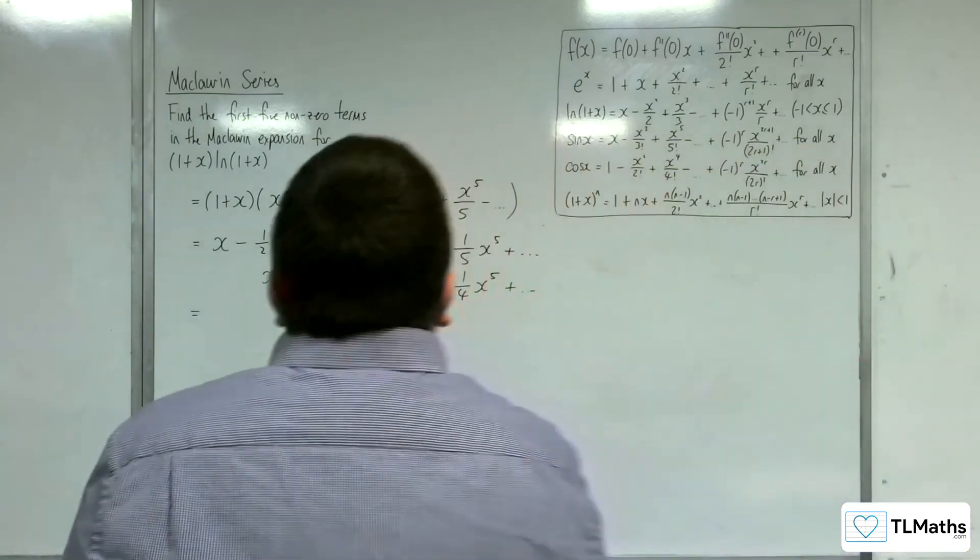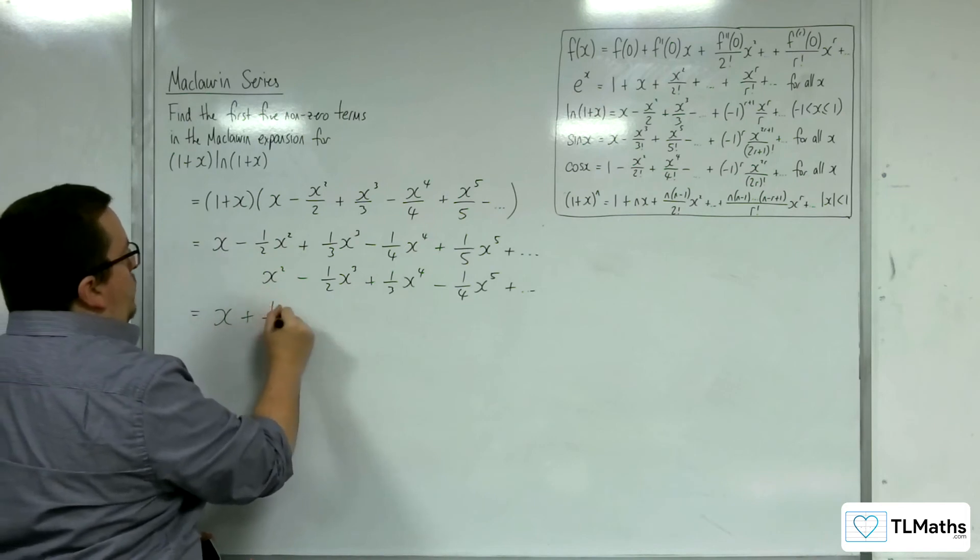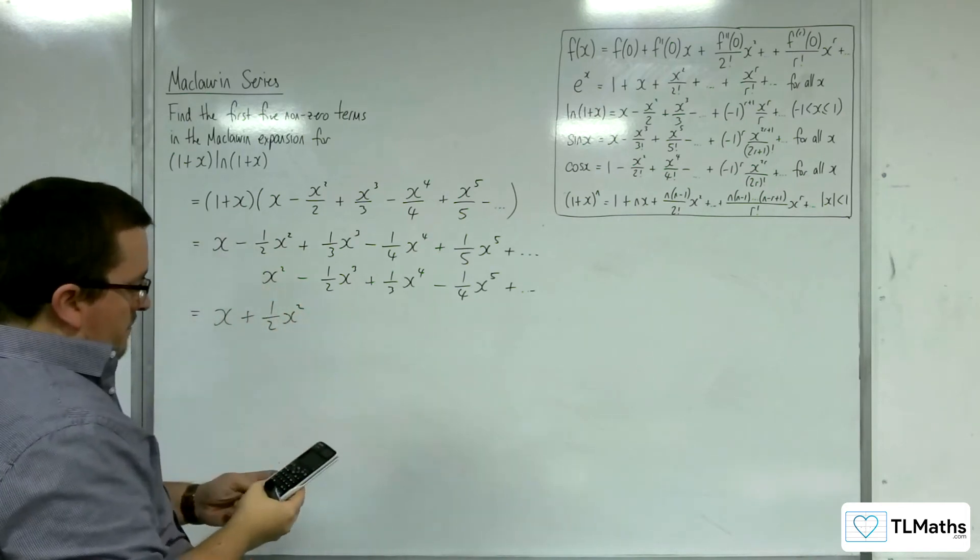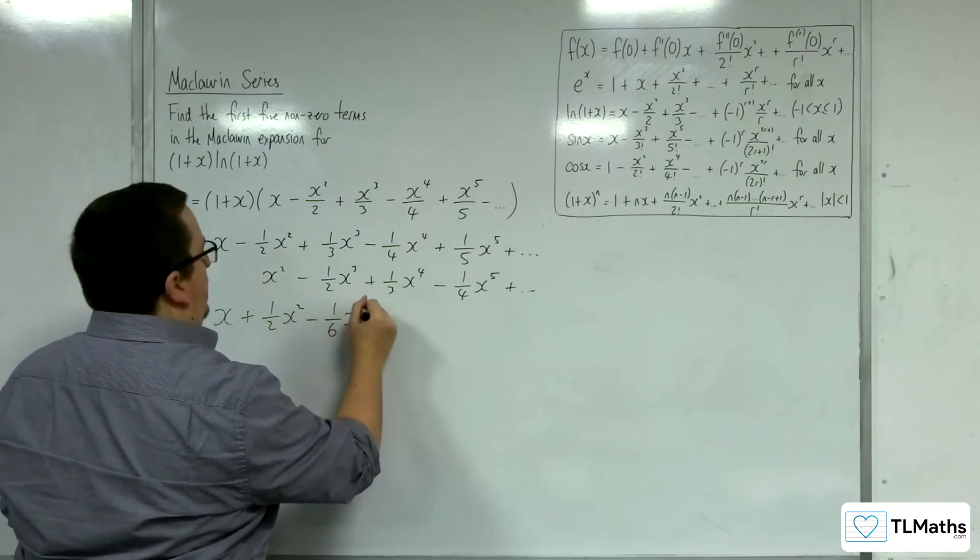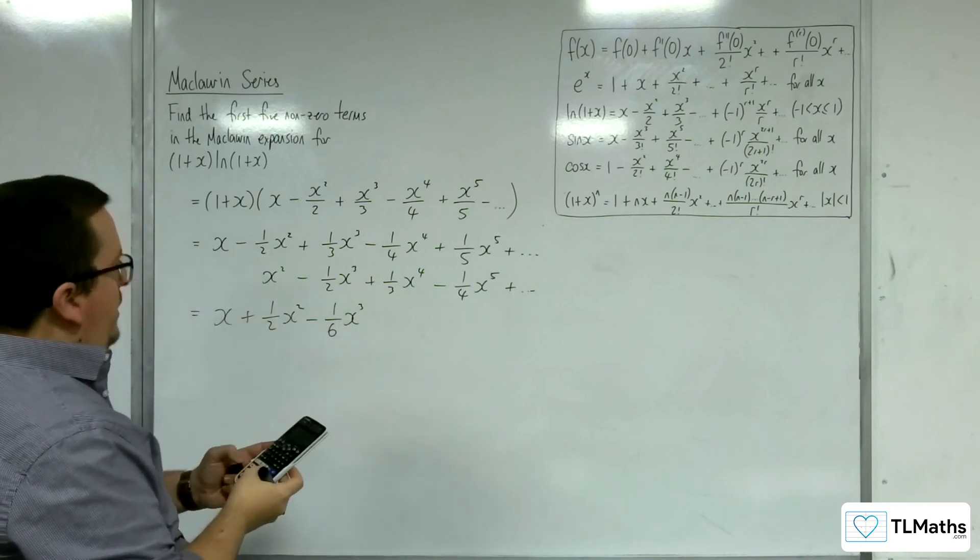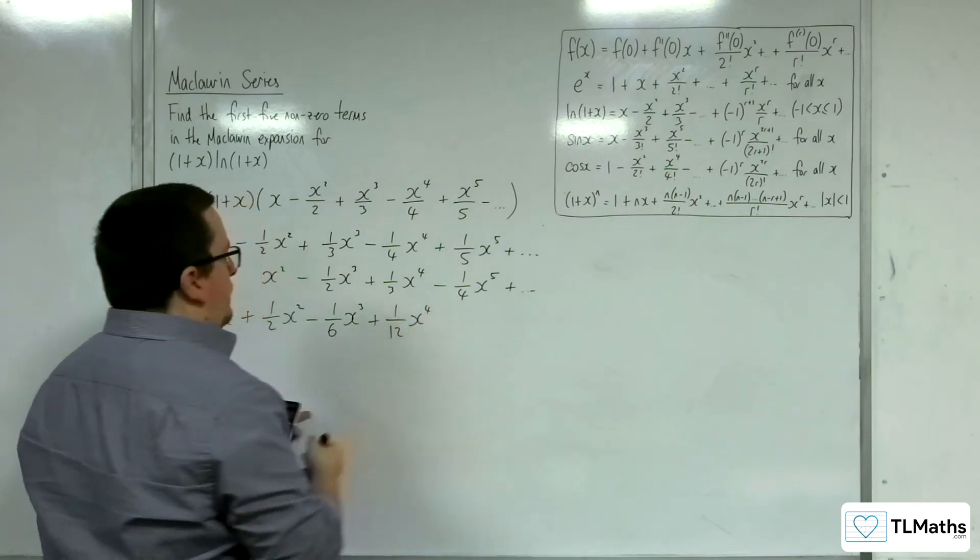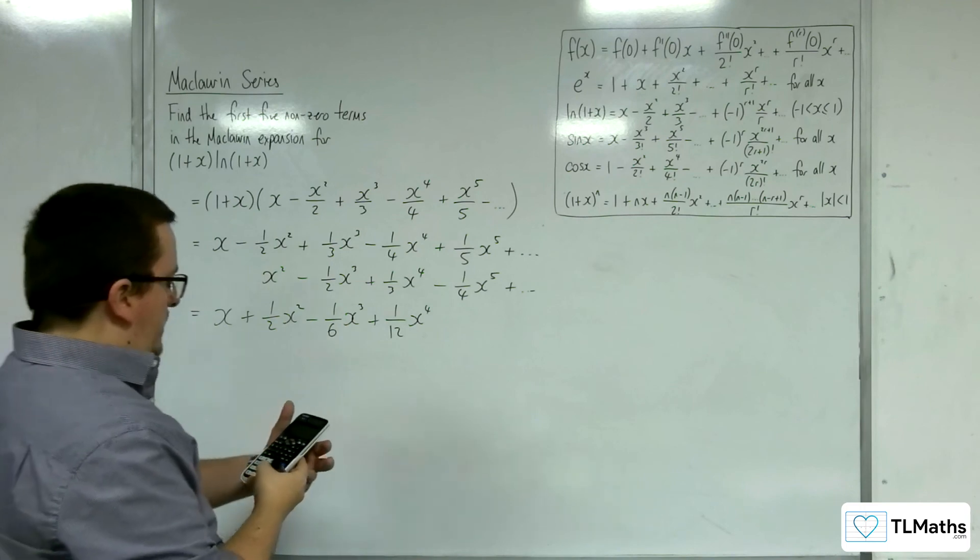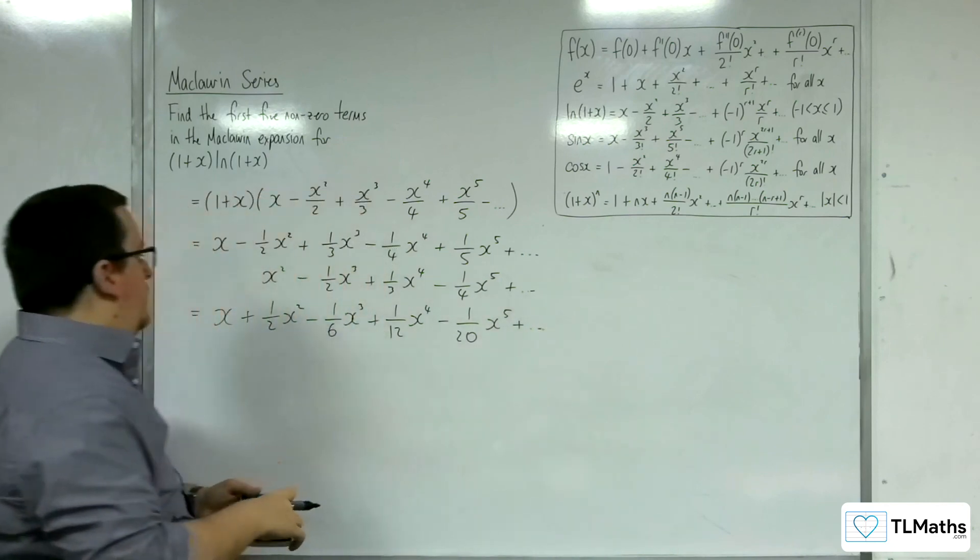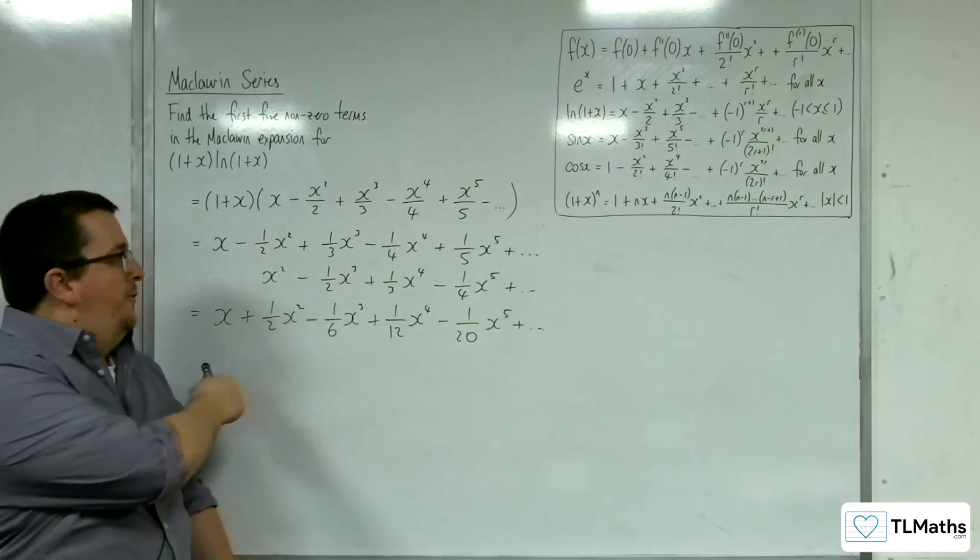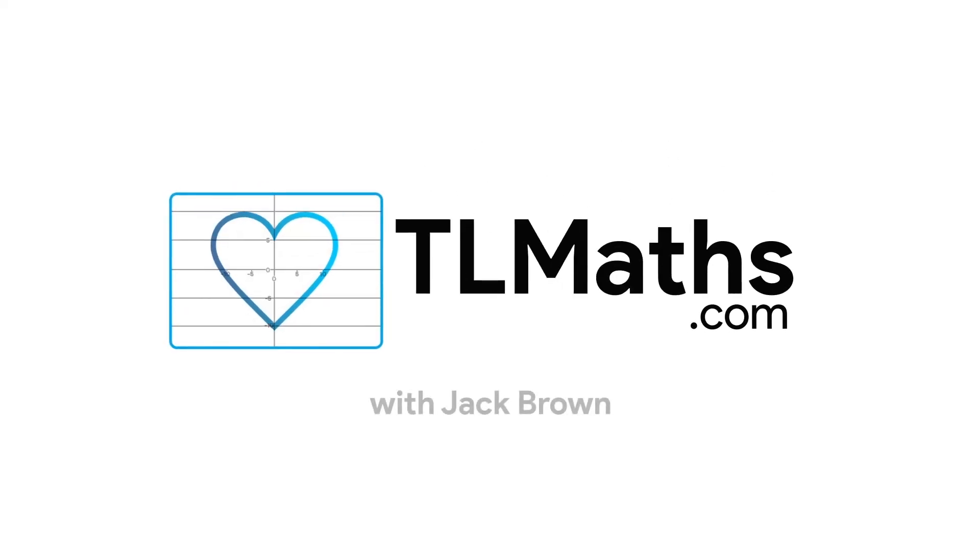So we have x, then -(1/2)x² + x², so +(1/2)x². One third take away one half is minus one sixth. So -(1/6)x³. Then -1/4 + 1/3 is (1/12)x⁴. And then 1/5 - 1/4 is -(1/20)x⁵, etc. And so these will be the first five non-zero terms in the expansion.